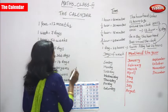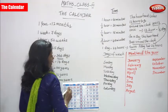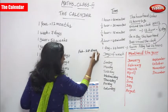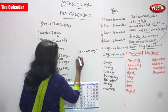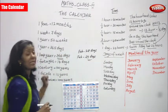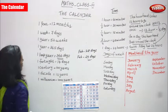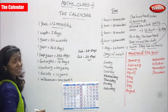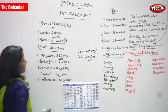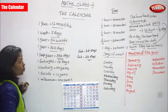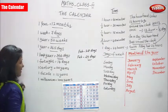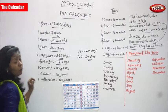Regarding leap year: generally February has 28 days, but if February has 29 days we call it a leap year. So one year is equal to 12 months, one week is equal to seven days, one year is equal to 52 weeks, one year is equal to 365 days, and one leap year is equal to 366 days.